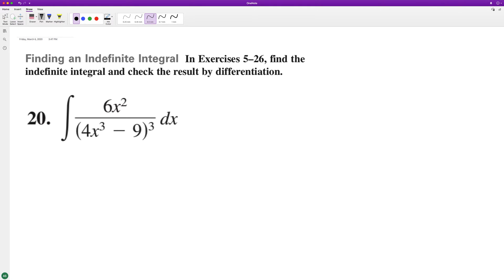For the following, we'll use U substitution. We'll use U equals 4x cubed minus 9, and dU is equal to 12x squared.